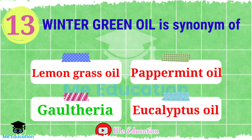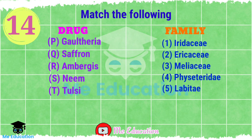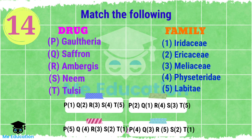Gaultheria is also known as intergrass oil. Next question — this is very important: Match the following. We have to match which one is correct for the other. Entries include Gaultheria, saffron, ambergris, neem, tulsi with their drug families — Iridaceae, Iridaceae, Melissa, Phyceteridae, and Labiatea. The right answer is Option B.